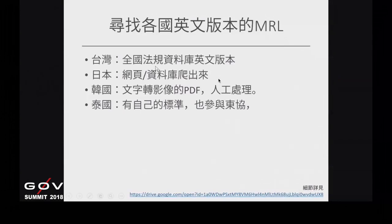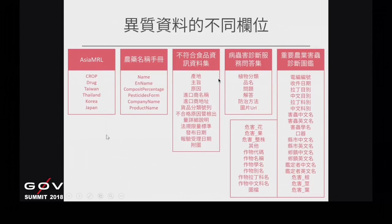我們已經解釋過資料爬取這些方面的問題。當我們有一個比較能夠統一查詢的農藥殘留標準資料庫之後，就可以開始回到化學農藥名稱的搜尋跟分析部分。農藥名稱手冊是從食藥署那邊，把與食品相關的農藥殘留名稱跟成分轉出來的，所以我們才有了一個比較能夠查詢的標準化學名稱詞彙。